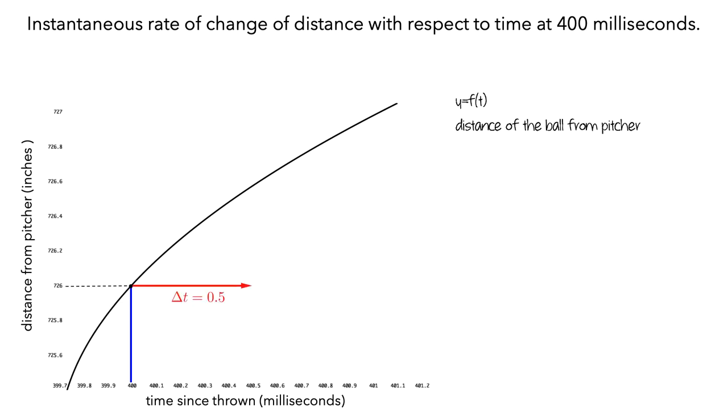Half a millisecond later, the ball was 726.572 inches from the pitcher. So the length of this blue line segment could be labeled as the amount of change of the function f, or delta f.